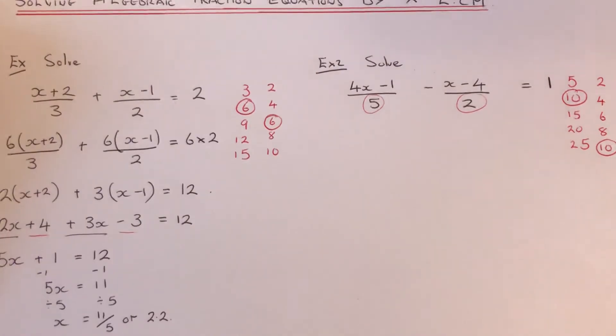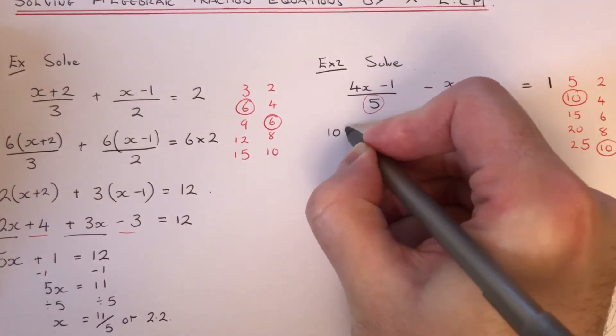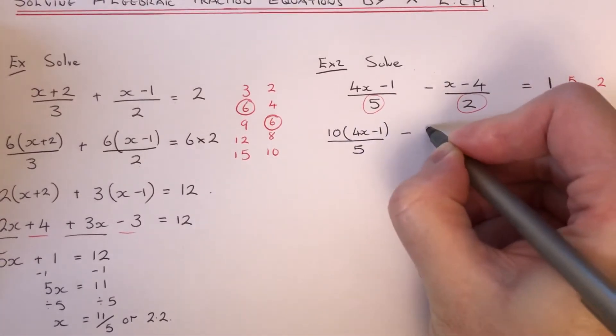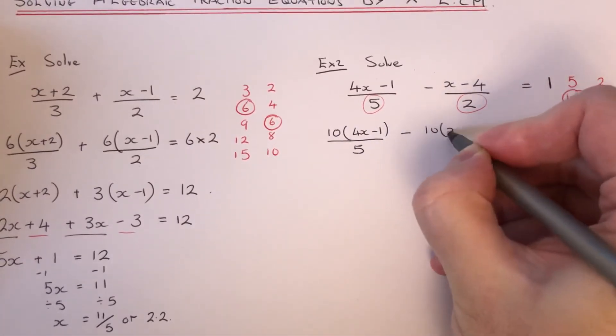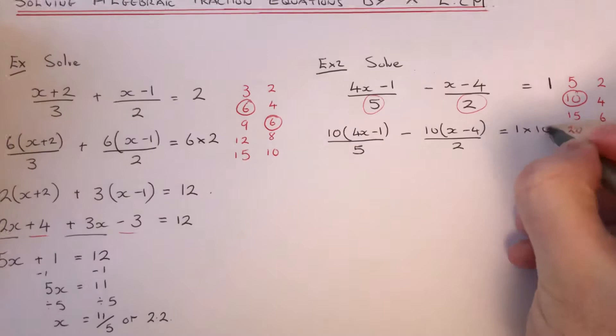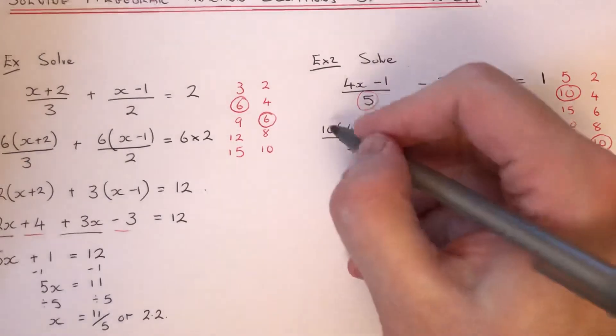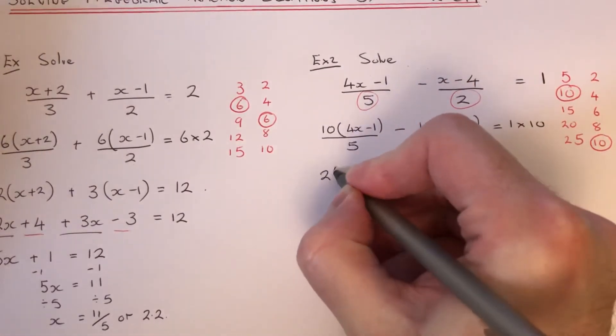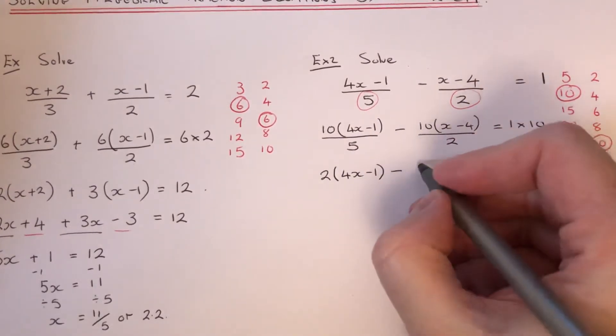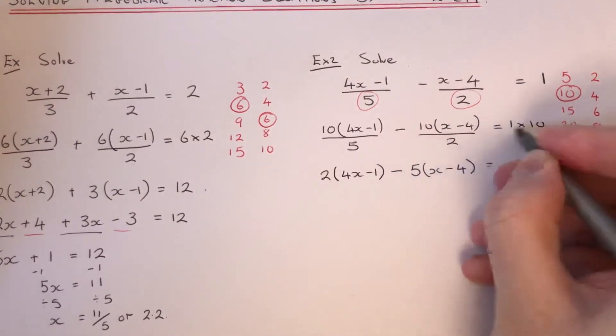We're going to multiply both sides of our equation by 10. This will give us 10 bracket 4x minus 1 over 5 minus 10 bracket x minus 4 over 2 equals 1 times 10. Again, the lowest common multiple will divide by the denominator. So 10 divided by 5 is 2. 10 divided by 2 is 5. And 1 times 10 is 10.